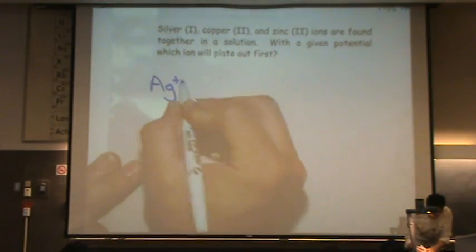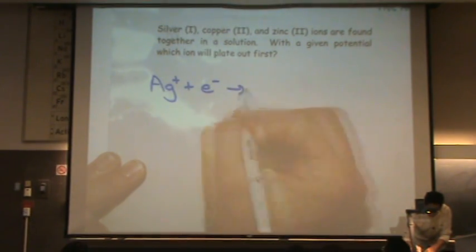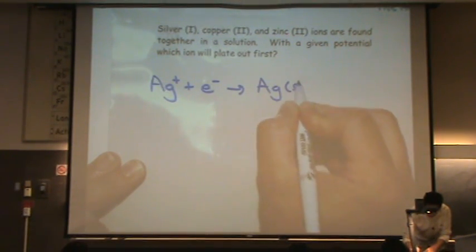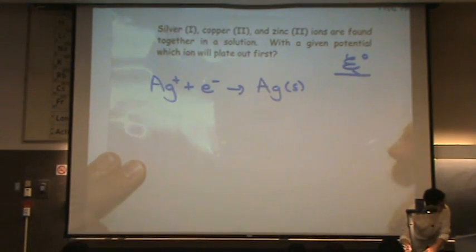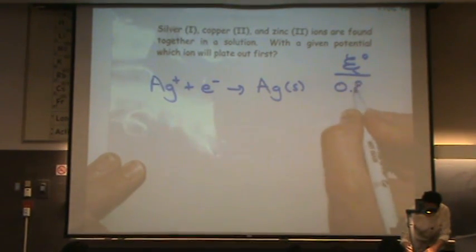We've got the silver one, Ag plus, plus an electron, goes to Ag solid, and I'm going to write down their potentials as well. This is 0.80 volts.